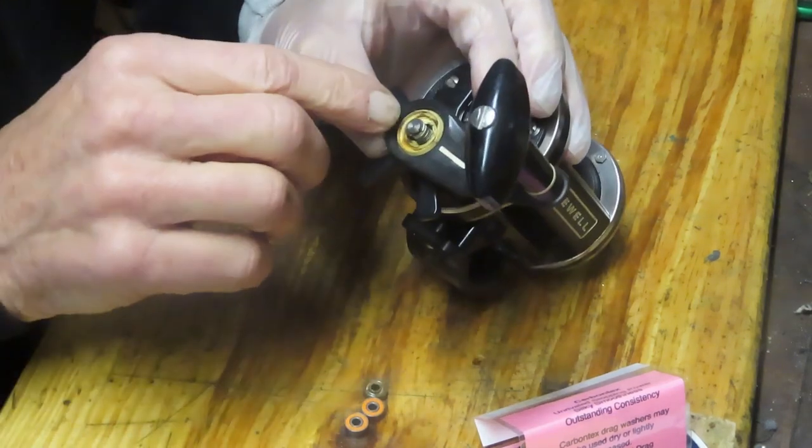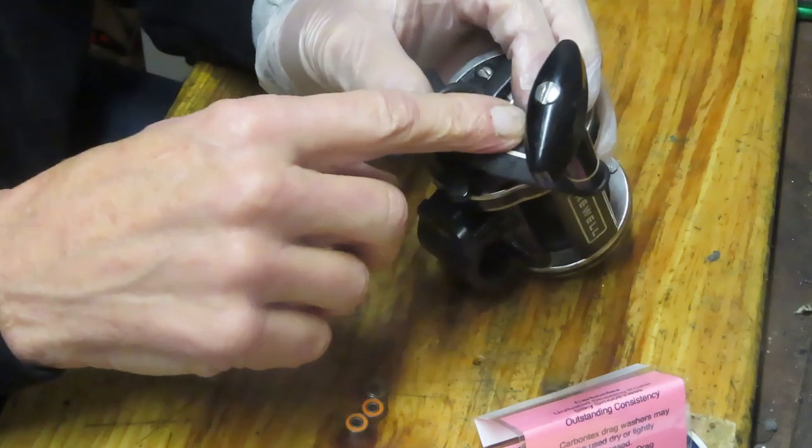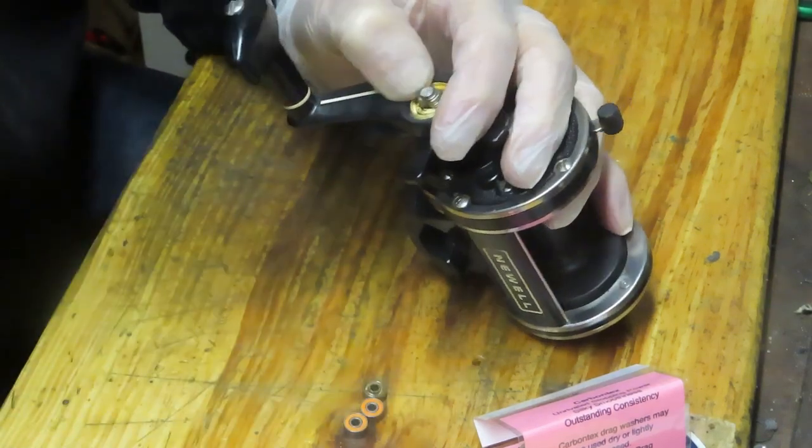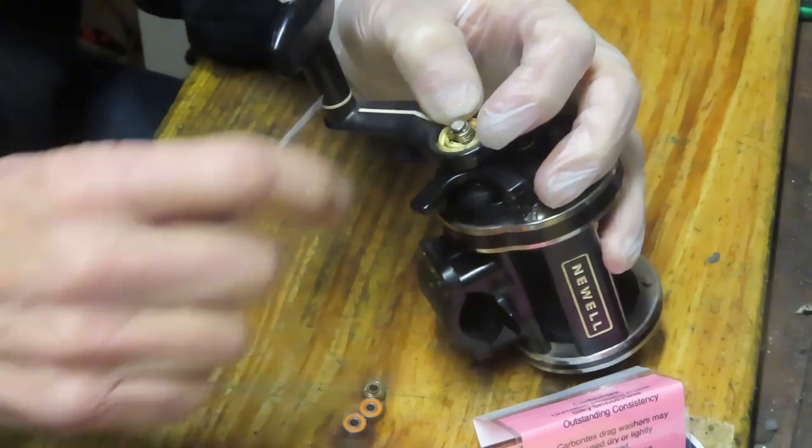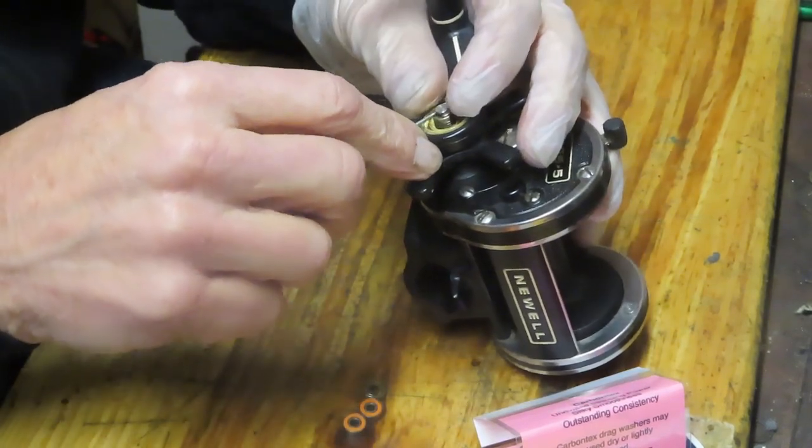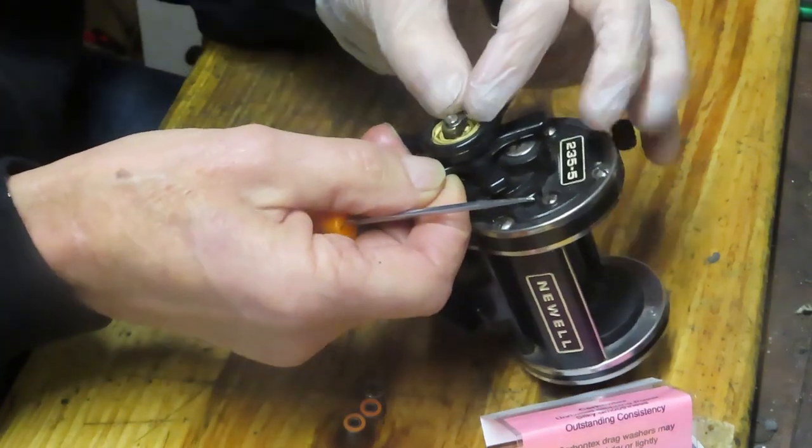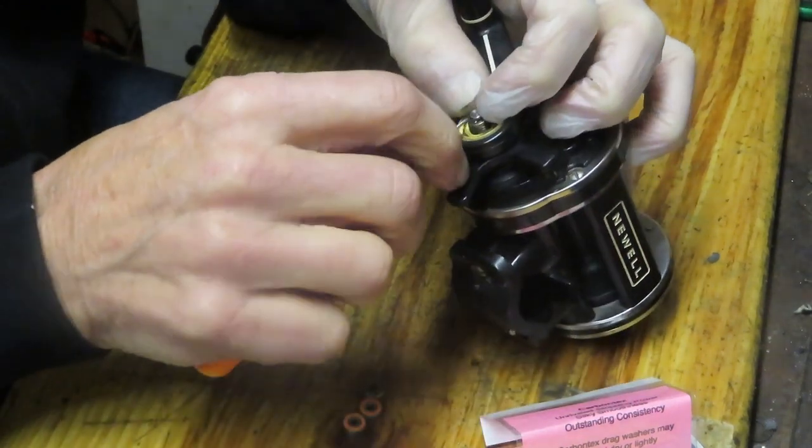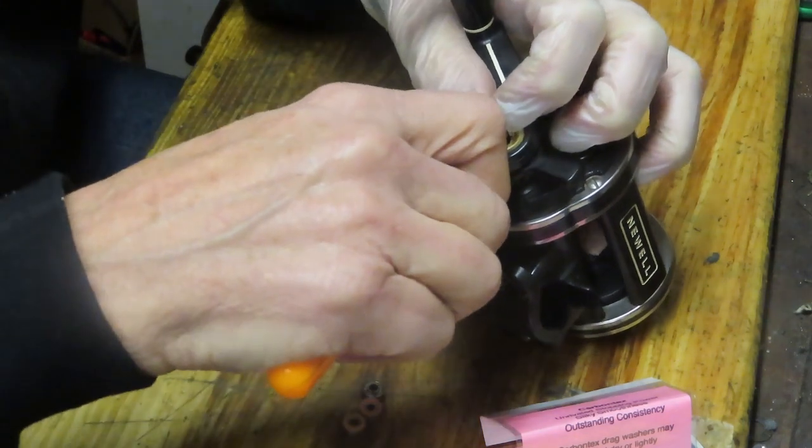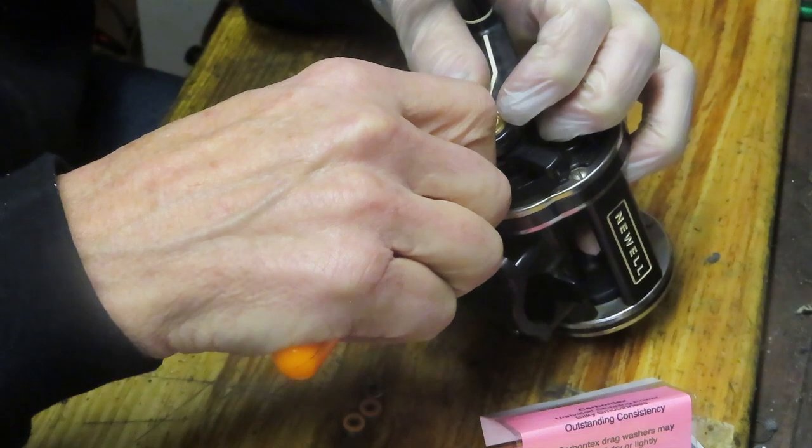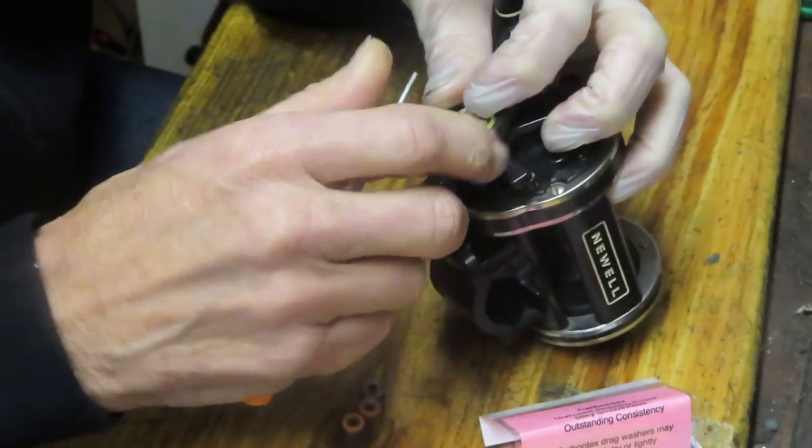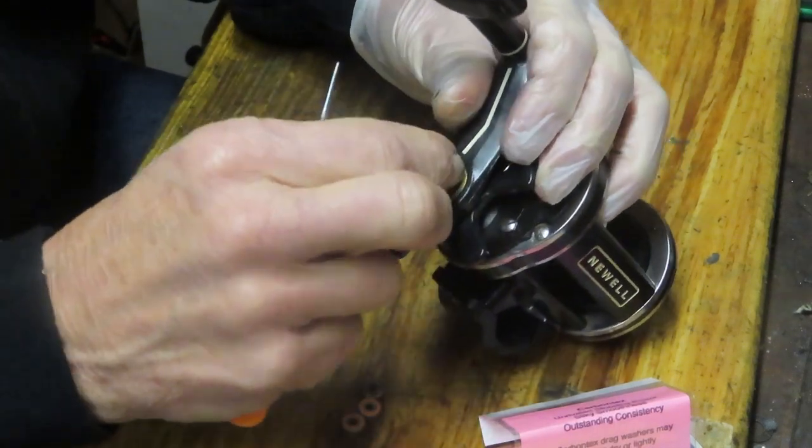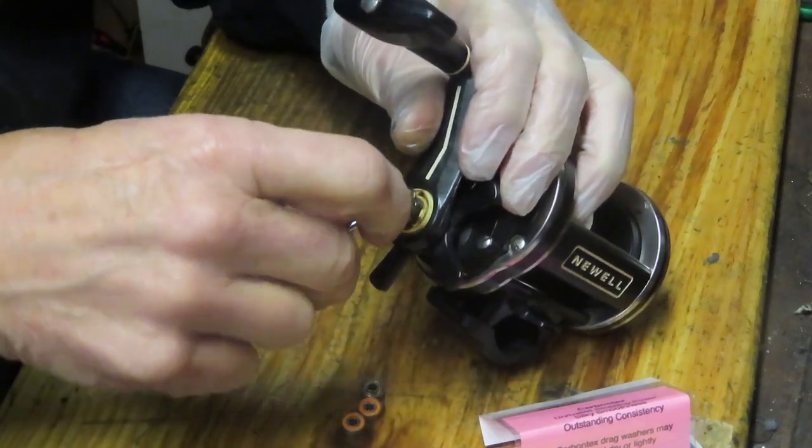This reel has a C-clip holding the gear sleeve and handle, so that has to come off after you remove the cap. I try to find one corner of that clip and use a pick to push it out. I also try to hold my finger behind it because these things have a tendency to fly when they're partially removed but not all the way removed. I'll pull it back and remove the clip.